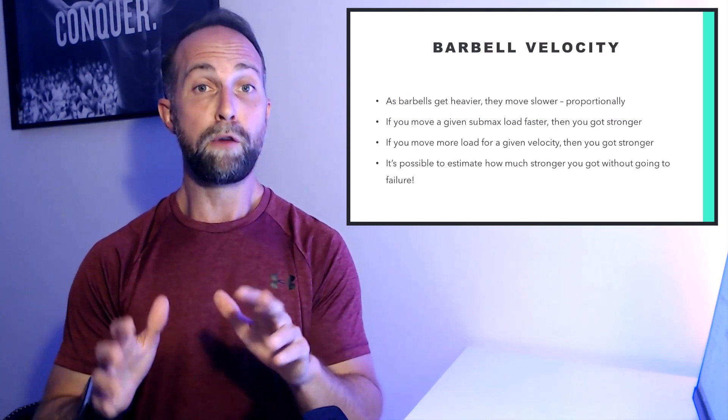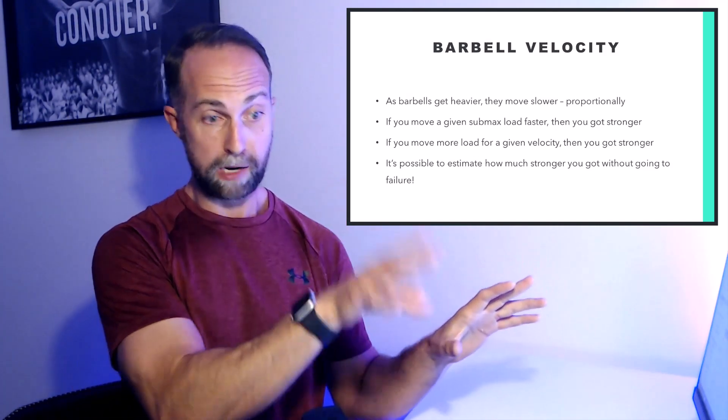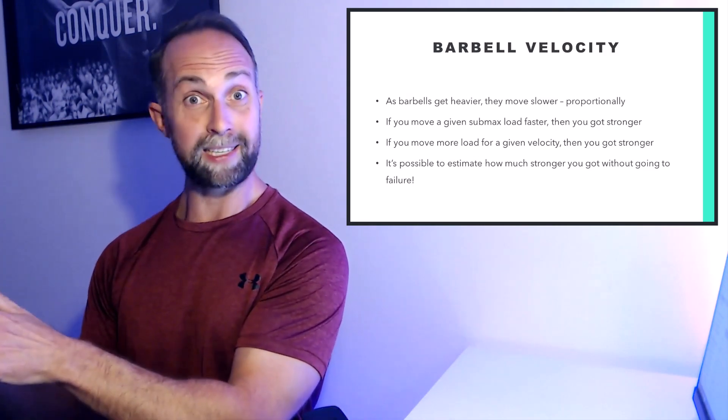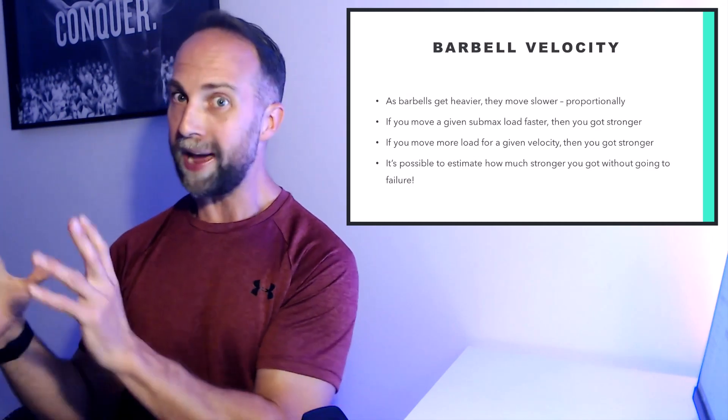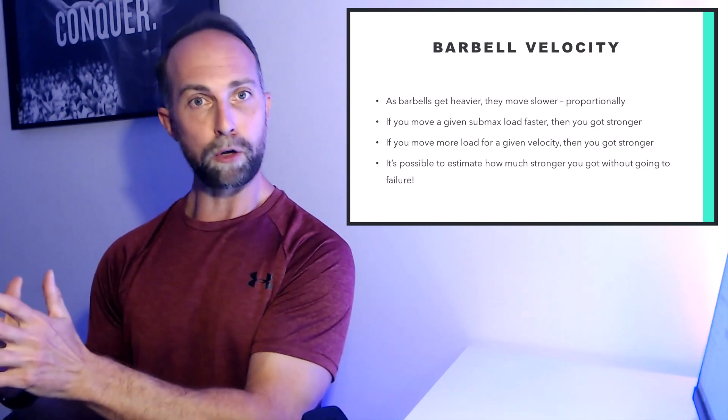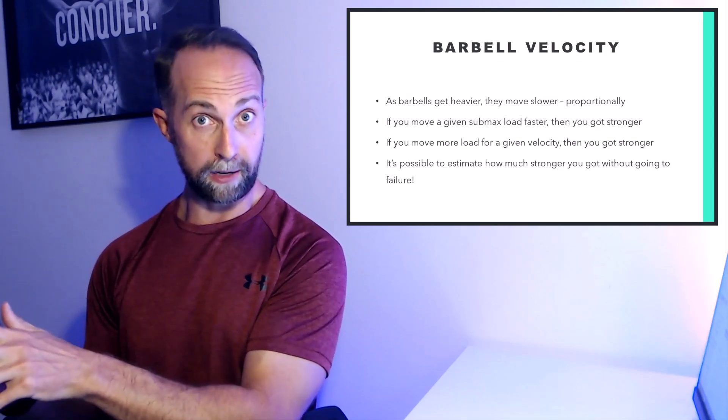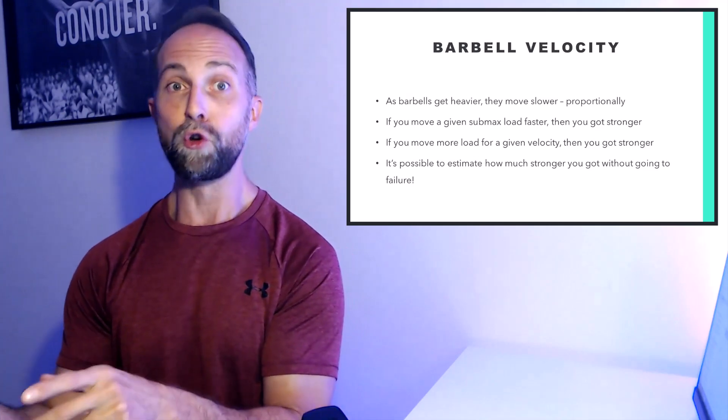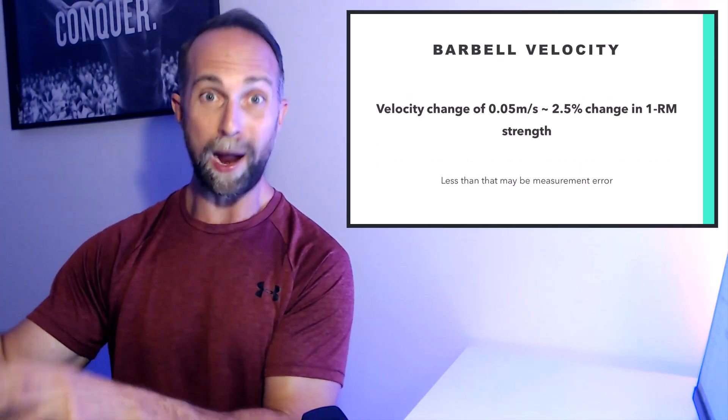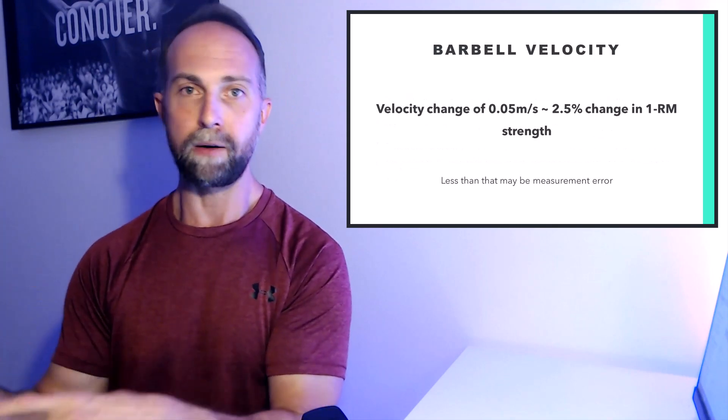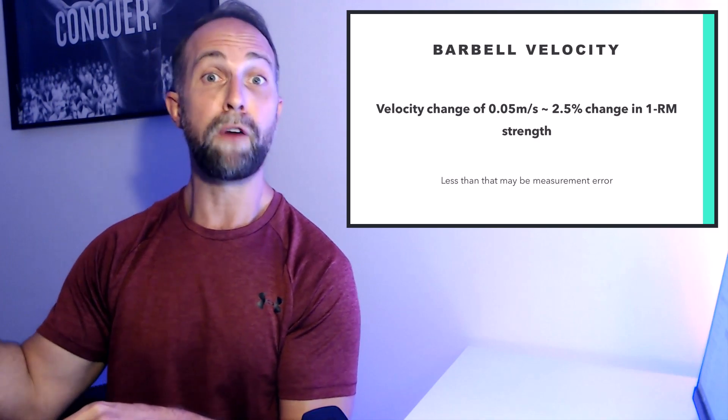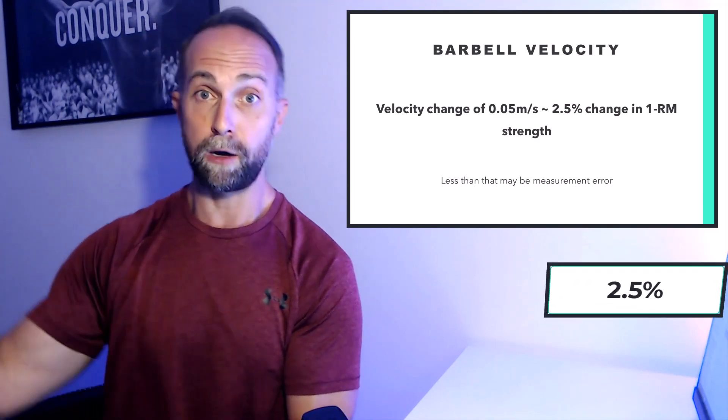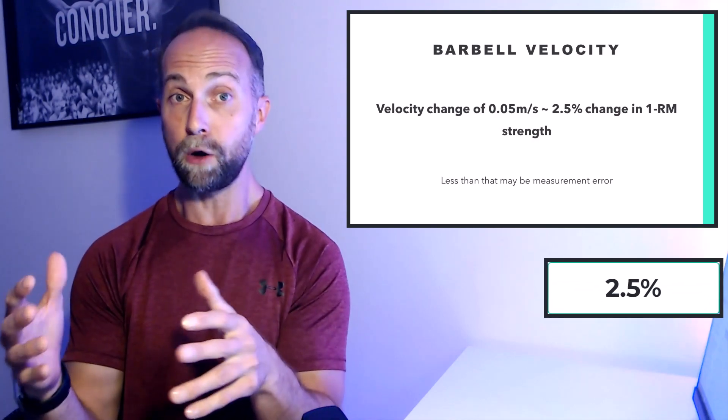If you move a given load heavier one week than the next—let's say you move 100 kilos faster next week than you did two weeks ago—that's going to indicate that you've gotten stronger because you're moving that barbell faster. And we can actually predict how much stronger you are based on how much faster you move the barbell. For example, if I move 100 kilos one week at 0.50 meters per second, and then the next week I move that 100 kilos at 0.55 meters per second, that indicates I've gotten stronger. How much stronger? If that velocity is increased by 0.05 meters per second, that's going to roughly represent about a 2.5 kilo increase on your 1RM score.